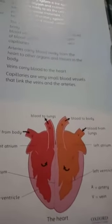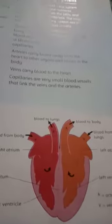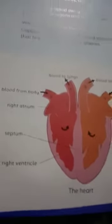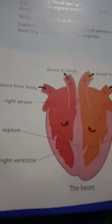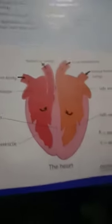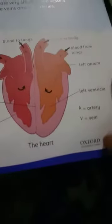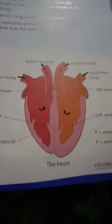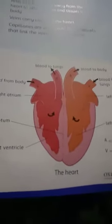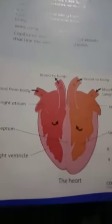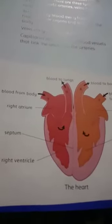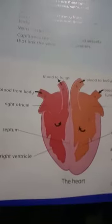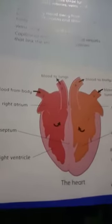Both atria contract at the same time, and as they contract their walls open and the blood is pushed towards the ventricles. The right atrium pushes blood into the right ventricle and the left atrium pushes blood into the left ventricle. When the blood is pushed, some mixing of blood does take place, but this mixture is separated by valves present inside.